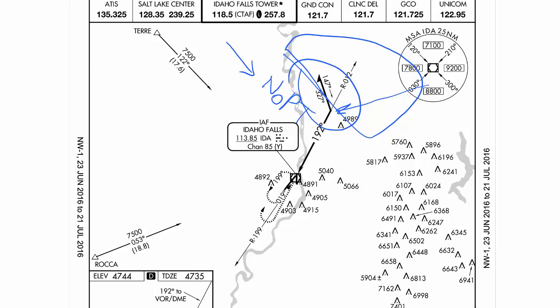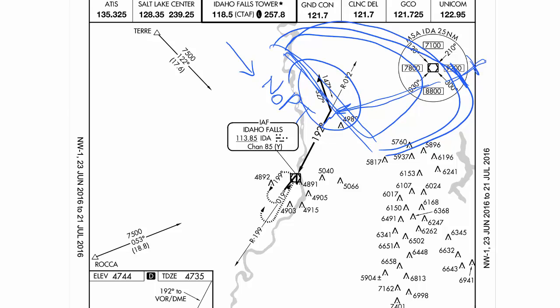If you're coming into the approach from this region here, air traffic control is probably going to clear you for a straight-in approach. What that means is they're going to give you a final altitude and an intercept heading, and they're going to clear you for the approach somewhere over in this region over here, and they're expecting you to intercept final and fly the approach in. They are not expecting you to come over to the VOR, back out, do the procedure turn, and back in. So that's a straight-in approach.